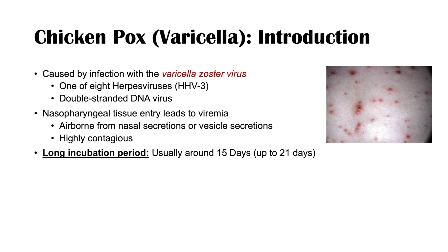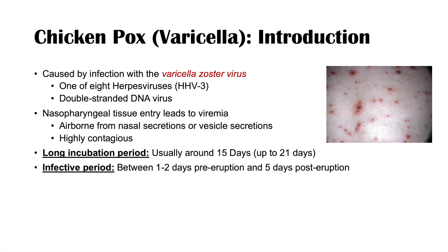After an individual becomes infected, it takes around 15 days for signs and symptoms to appear. When they do begin to show signs and symptoms, there is eruption of vesicles. The infective period — when an individual can infect others — occurs between one to two days pre-eruption and lasts up to five days post-eruption, after their last vesicle eruption.